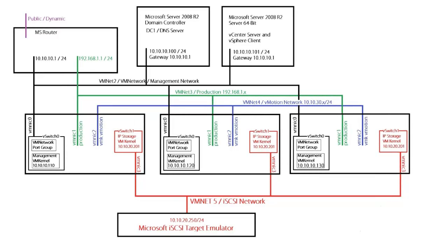Hey everybody, welcome to this video presentation on how to install your ESXi 5x host into your vCenter environment. In the last video presentation you saw a demonstration of how to actually build your ESXi 5.0 host, go through the process of installing it, getting it properly configured, adding information to DNS, and getting everything set up for your host with an initial config. We're going to take a look at that same environment here, and this is going to be a very short quick video to show you how to add that host in.